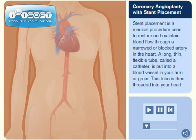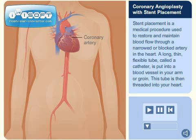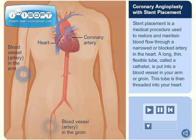Stent placement is a medical procedure used to restore and maintain blood flow through a narrowed or blocked artery in the heart. A long, thin, flexible tube called a catheter is put into a blood vessel in your arm or groin, and this tube is then threaded into your heart.